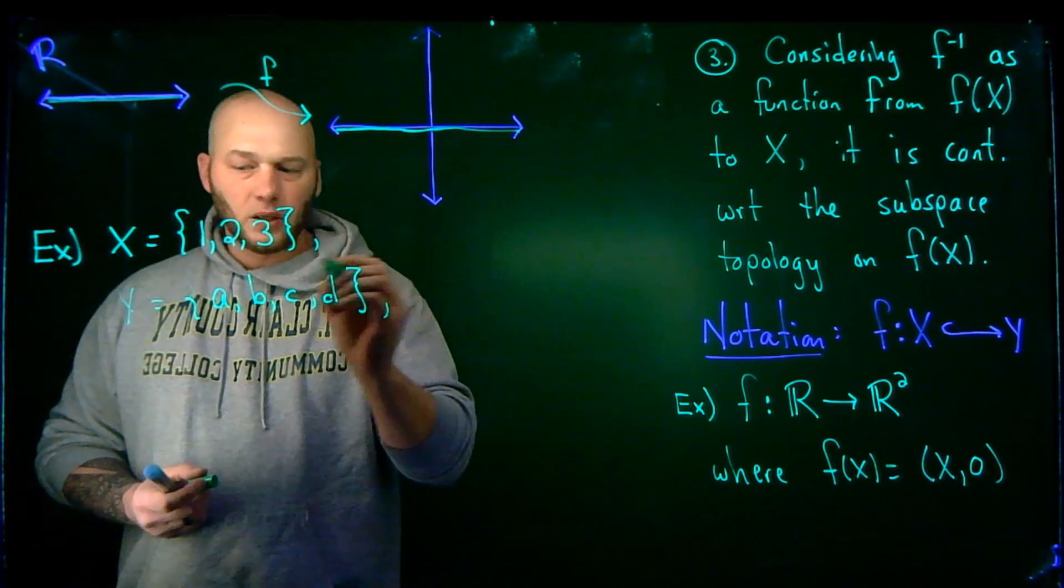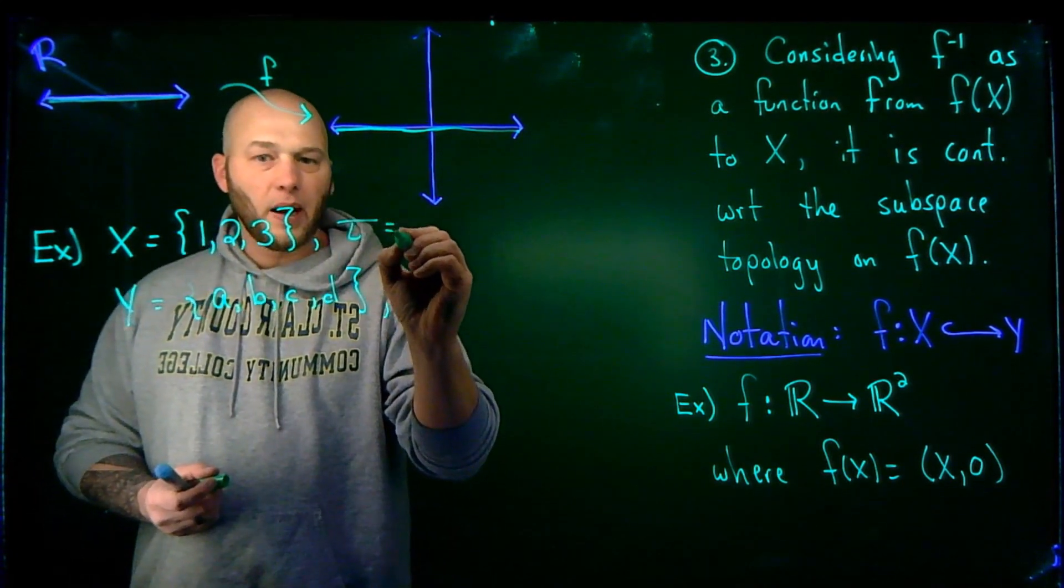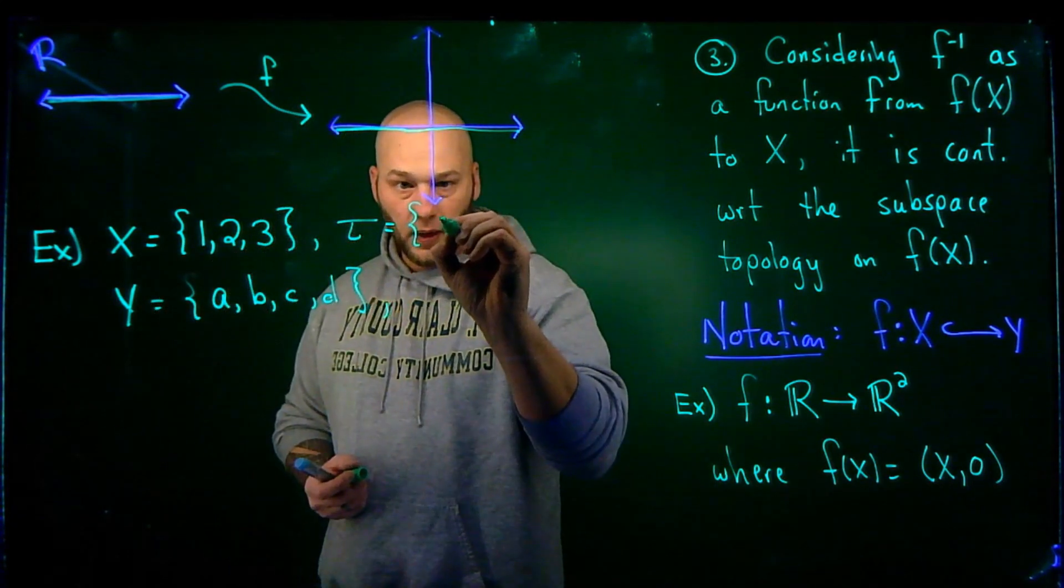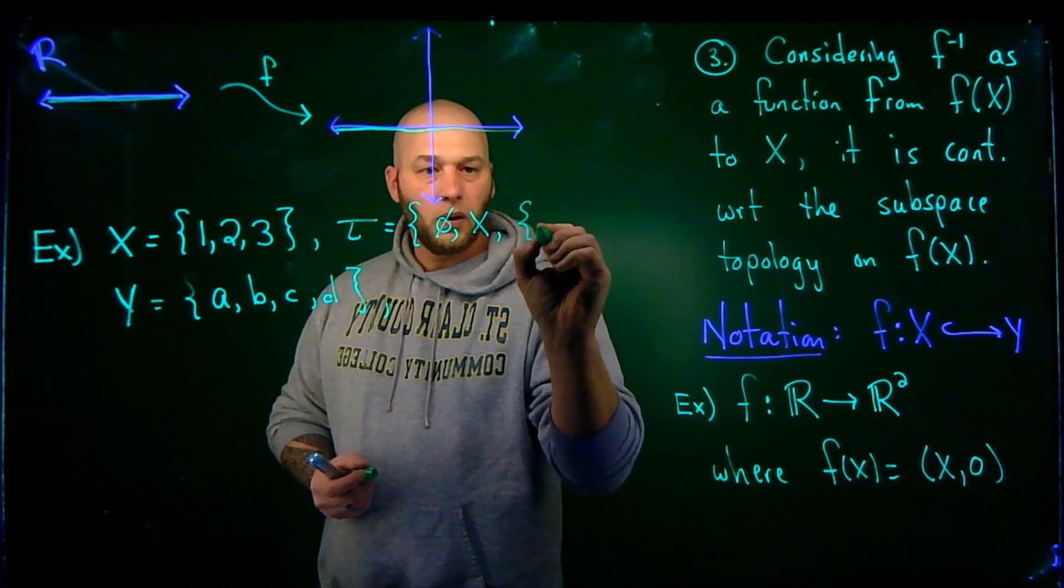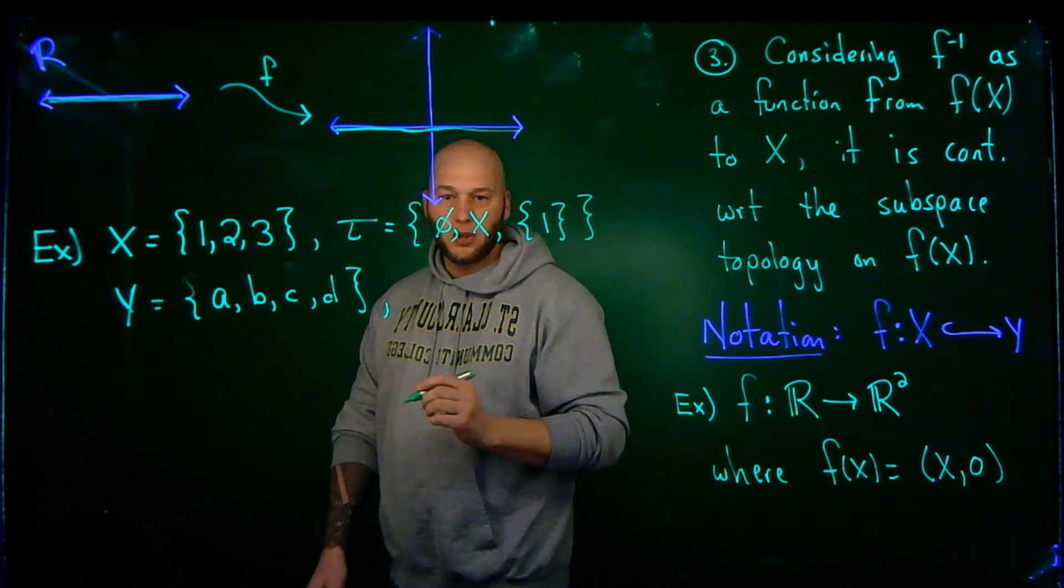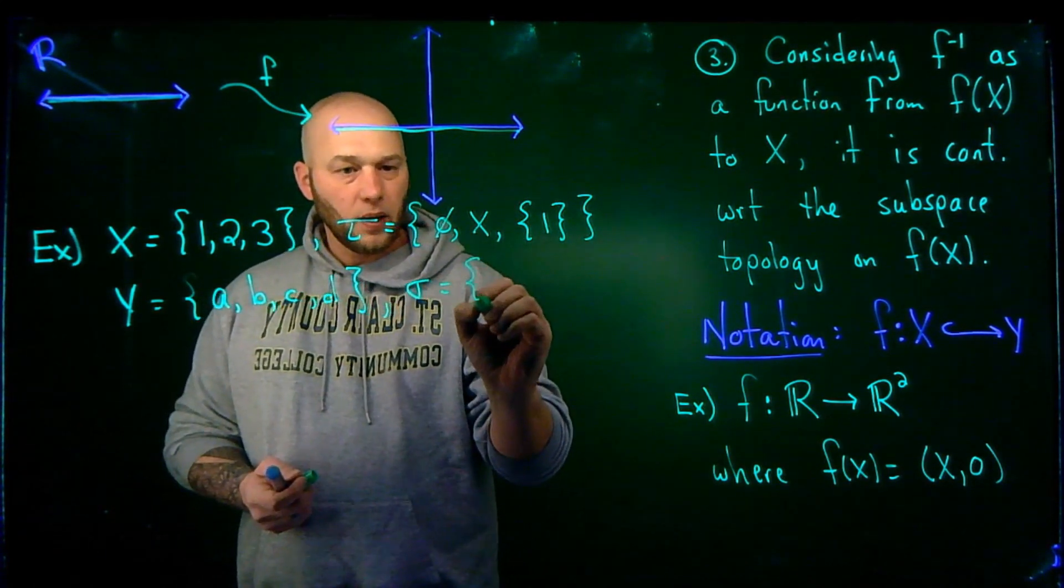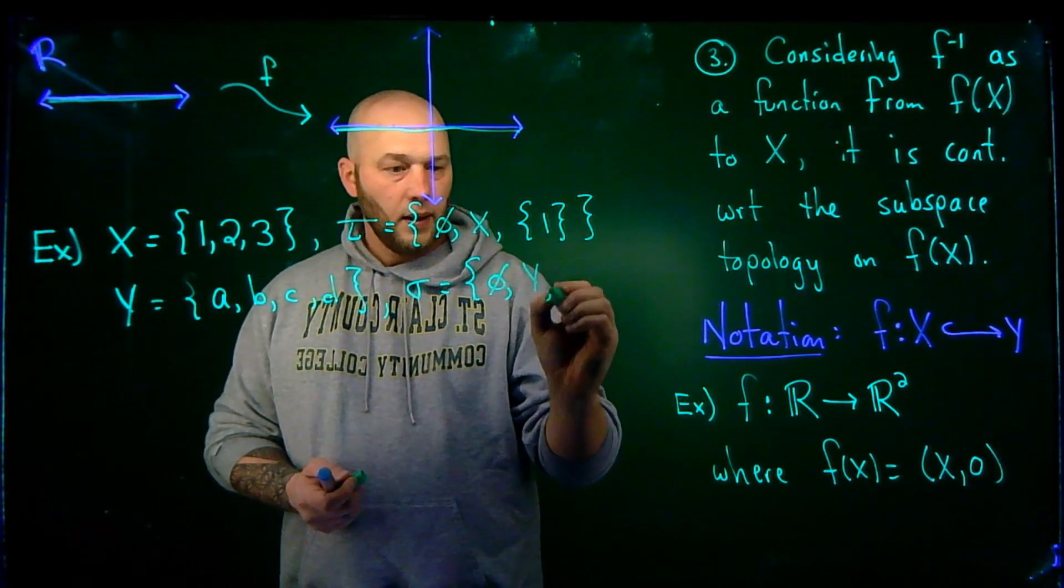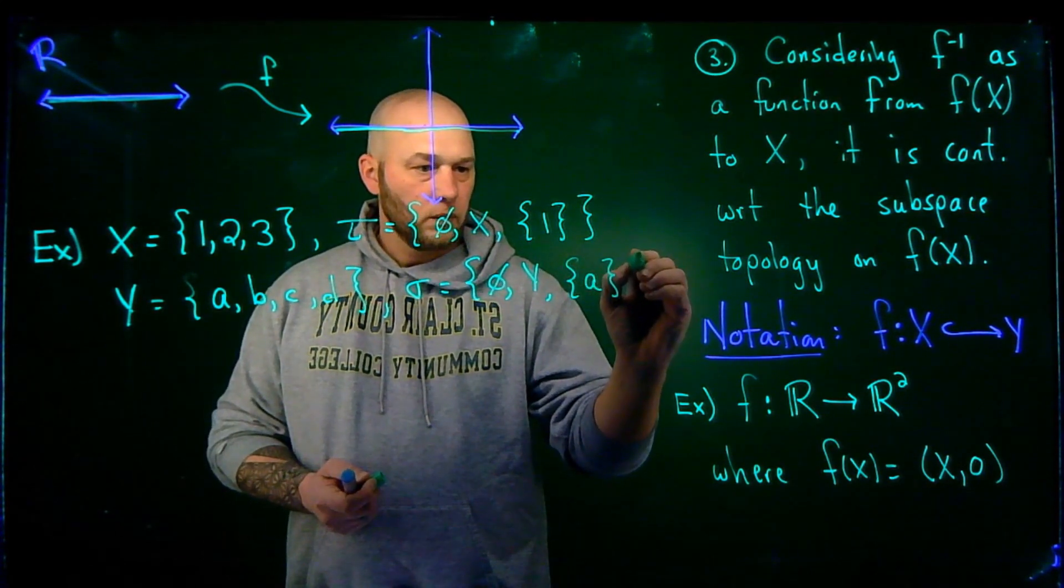Now, I also want to define a topology in each one of these. So let's say tau, which is going to be the topology on the set X, is going to consist of, so certainly I've got the empty set, and I've got the set X itself, and then I'm going to take the singleton 1. So that's a topology on that set. And then for the set Y, I'm going to define the following topology. I'm going to take the empty set, I'm going to take Y, I'm going to take the singleton A.